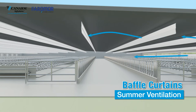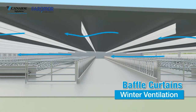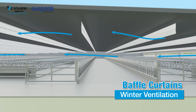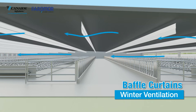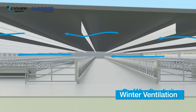In winter, the baffle curtains can be partially or completely raised, creating a larger unrestricted space above the cows. This increased path for airflow allows the air to expand, reducing air velocity and associated drafts on the cows.